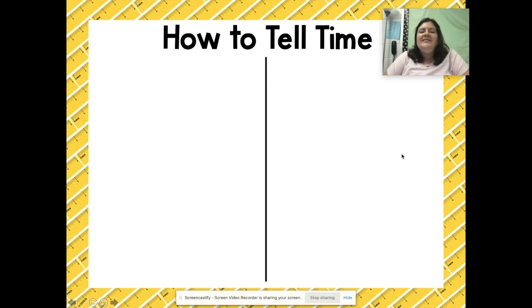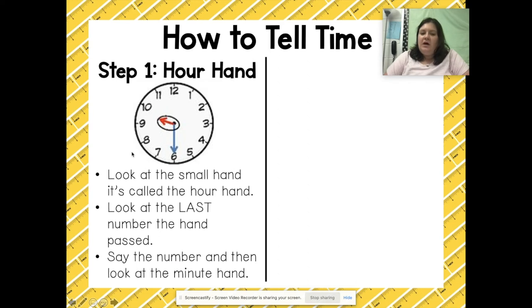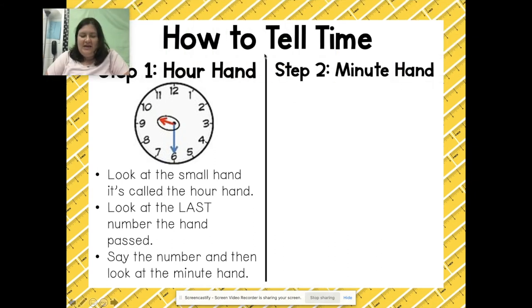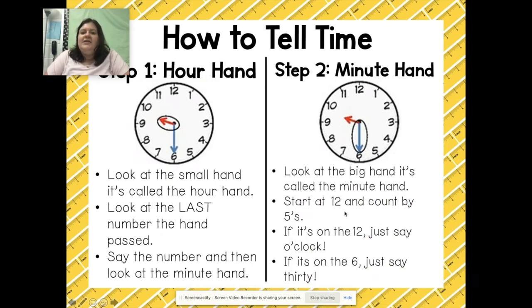Let's talk about how to tell time. We usually start with the hour hand — the short hand, shown in red in this picture. Look at the small hand and find the last number the hour hand has passed; you always go backwards to figure out the current hour. Then for step two, look at the minute hand — the long hand. Start at 12 and count by fives until you reach where the minute hand is pointing. If it's on the 12 just say zero; if it's on the 6 just say 30.